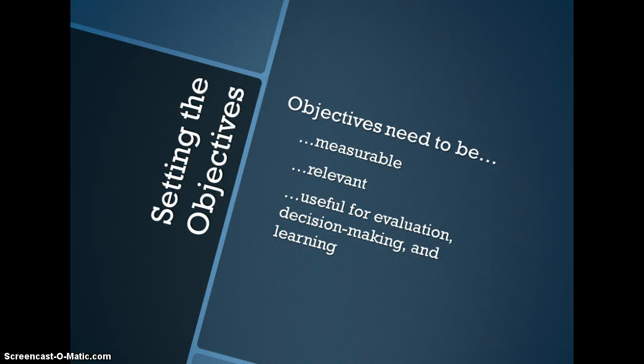Once the decision problem has been framed, the next step is often setting the objectives. An adaptive approach requires explicit and measurable objectives. Objectives need to be measurable so that progress towards their achievement can be assessed, and performance that deviates from the objectives may trigger a change in management direction.